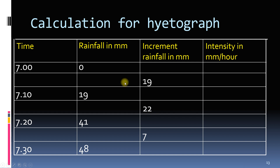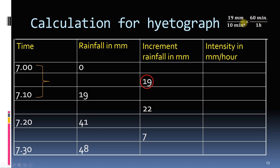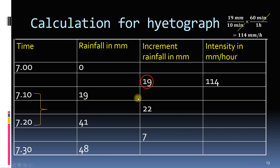Now let us find the intensity for the first time period, from 7:00 to 7:10 am. We divide the incremental rainfall of 19 mm by 10 minutes, which is the difference between 7:10 and 7:00 am. To convert mm per minute to mm per hour, we multiply by 60 minutes per 1 hour, and the minutes cancel out, giving an intensity of 114 mm per hour. For 7:10 to 7:20, we again have a 10-minute interval but the incremental rainfall is 22 mm, so the intensity equals 132 mm per hour. Similarly, we can find intensities for the rest of the periods.